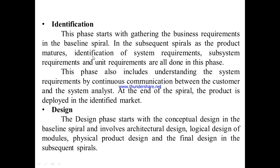The identification phase starts with gathering business requirements in the baseline spiral. In subsequent spirals, as the product matures, identification of system requirements, subsystem requirements, and unit requirements are all done in this phase. As the product develops, system requirements, subsystem requirements, and unit requirements are progressively identified.